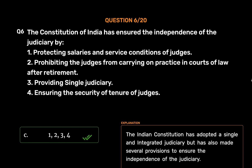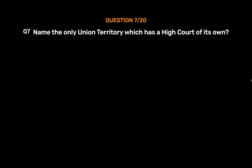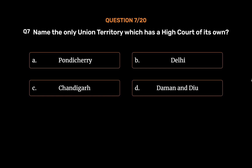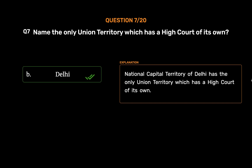This ensures that they don't have to favor anyone during their job for future benefit. Question No. 7. Name the only union territory which has a high court of its own. Option A: Pondicherry. Option B: Delhi. Option C: Chandigarh. Option D: Daman and Diu. The correct answer is Option B: Delhi. The National Capital Territory of Delhi is the only union territory which has a high court of its own.